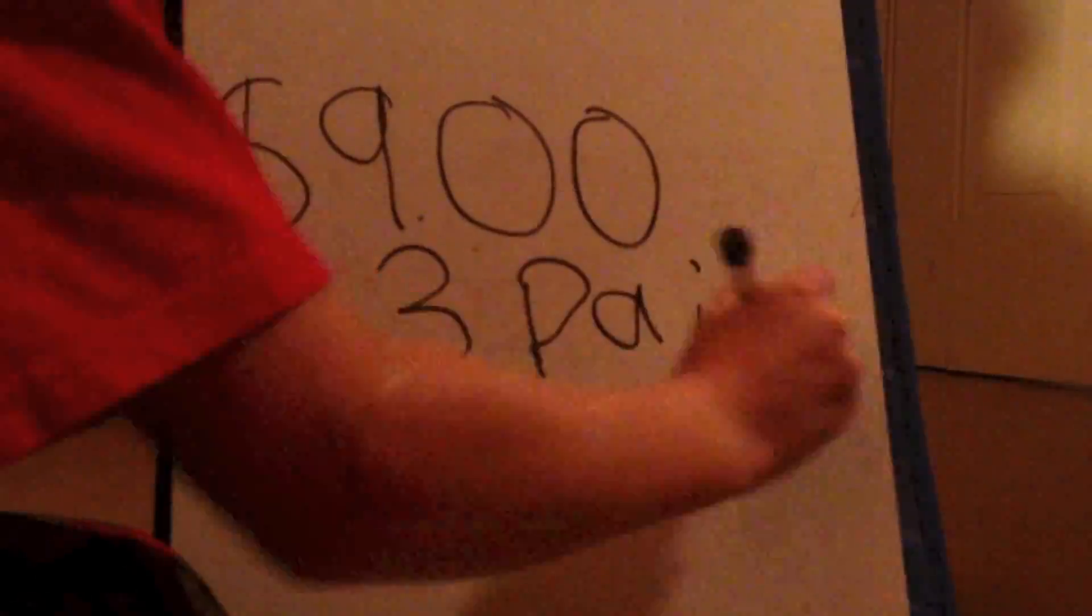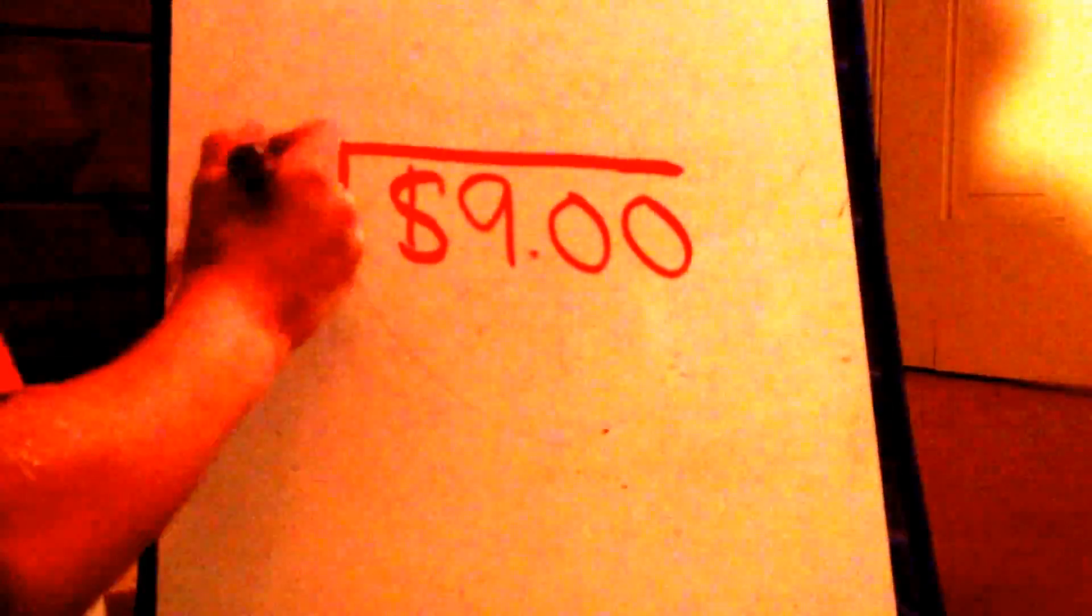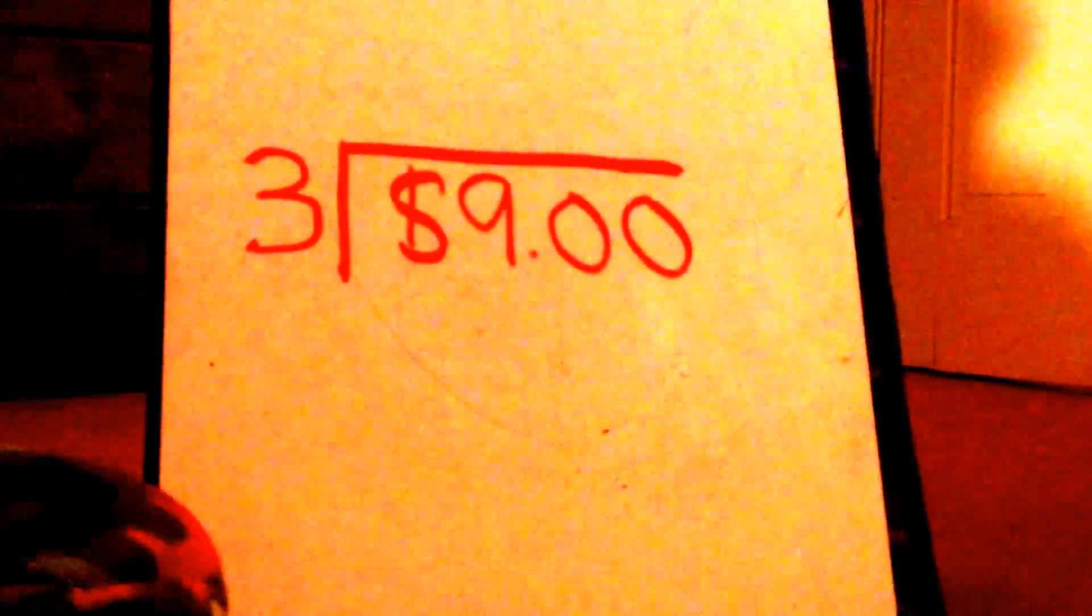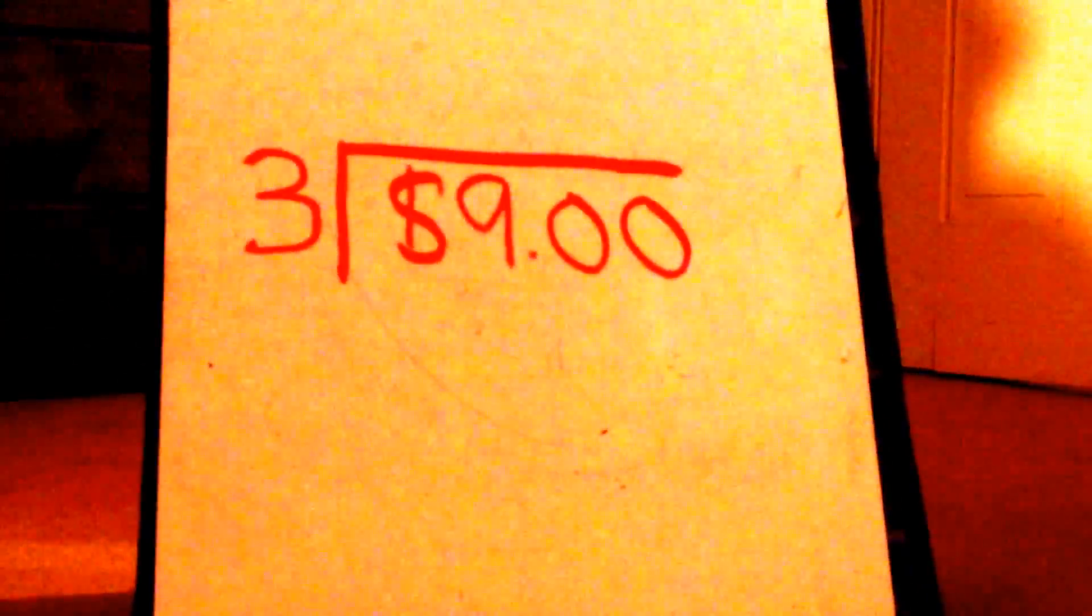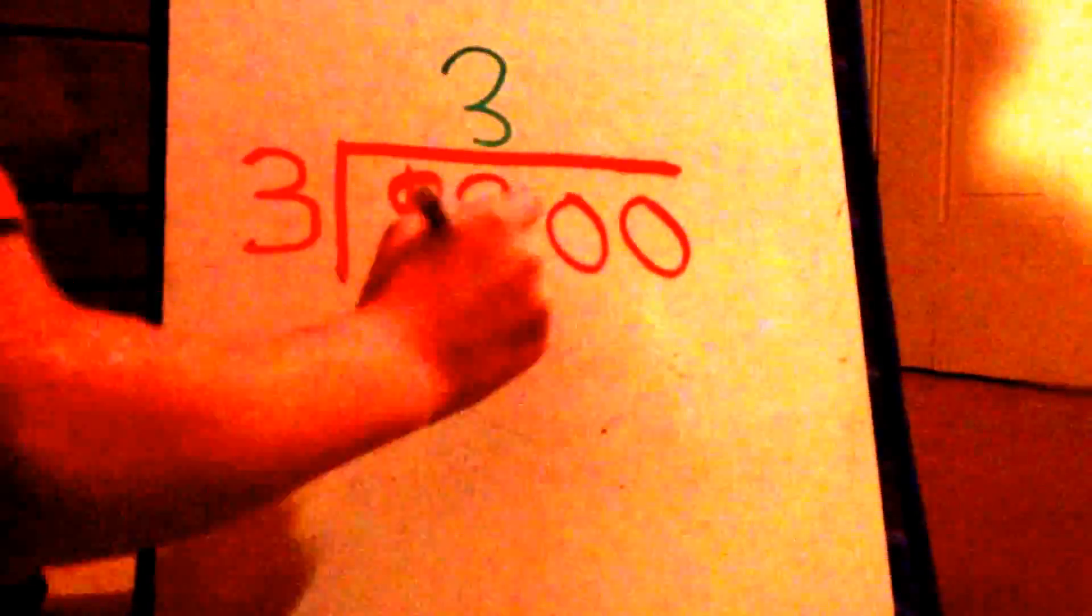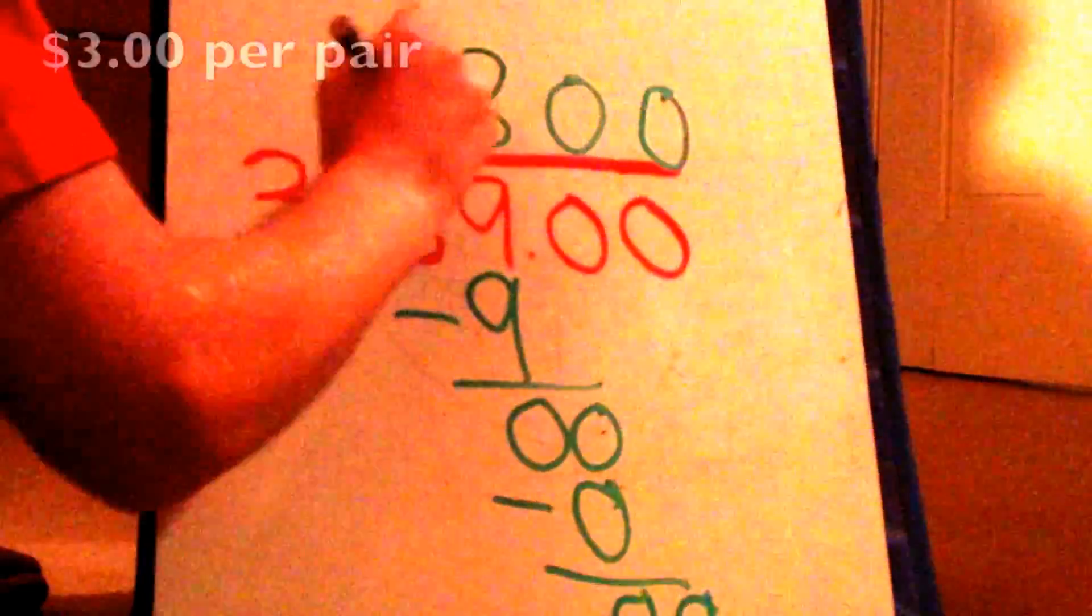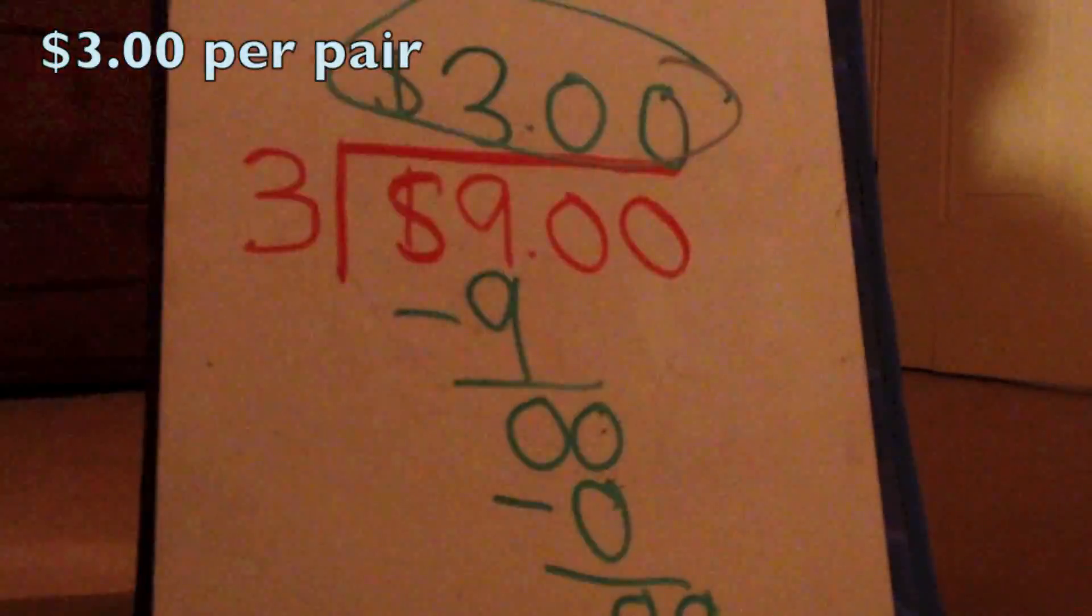So what is the unit rate if 3 pairs of socks cost $9? To find the unit rate, just find the quotient of the two numbers. So I just divided $9 by the 3 pairs of socks and I got $3, and that's for one pair of socks.